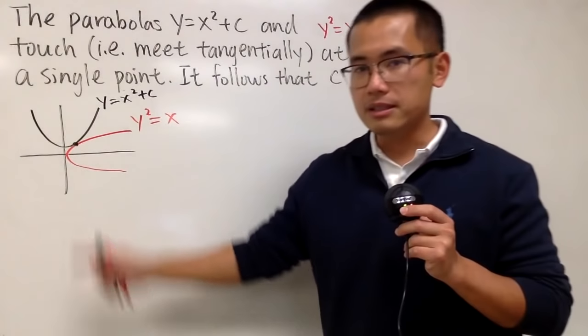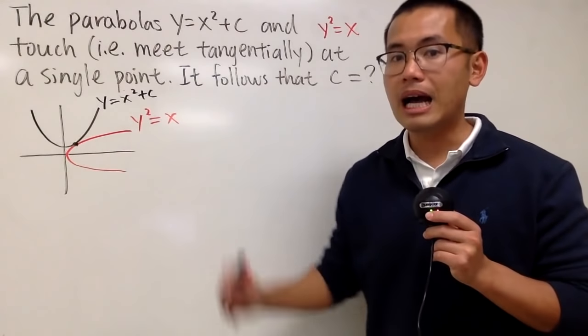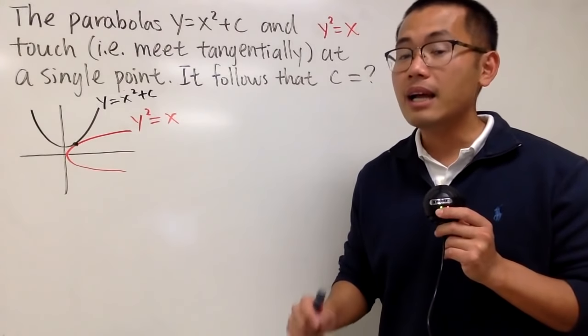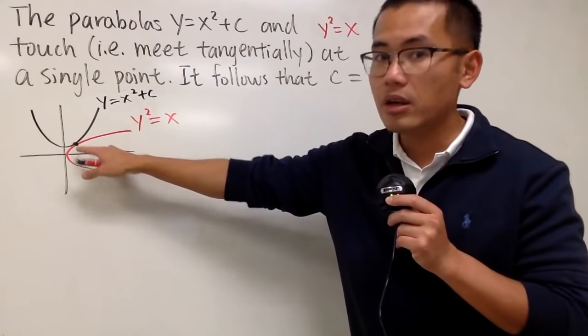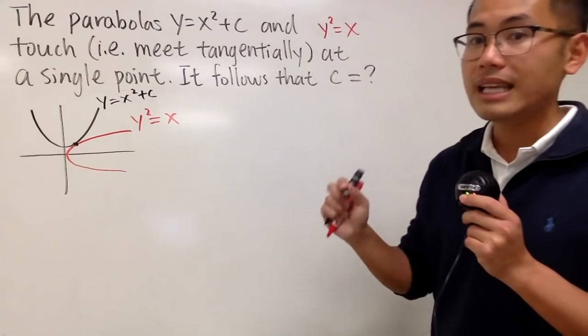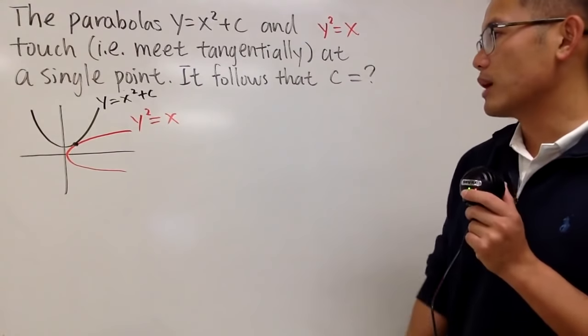With this being said, here's the first part. They must have the same point. Obviously. And the second part is that they must have the same derivative, because they touch each other tangentially, meaning that they have the same tangent line. So that's exactly what we are going to do.